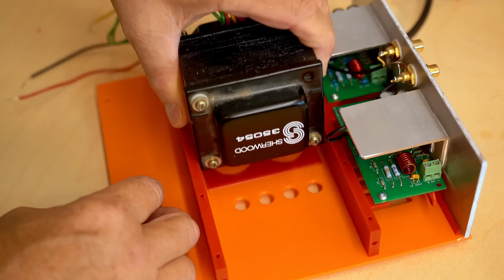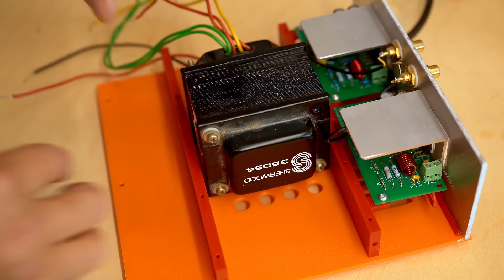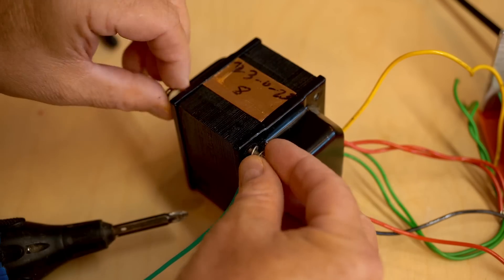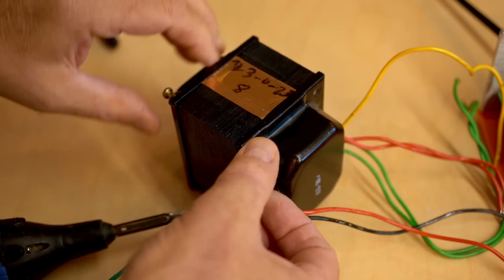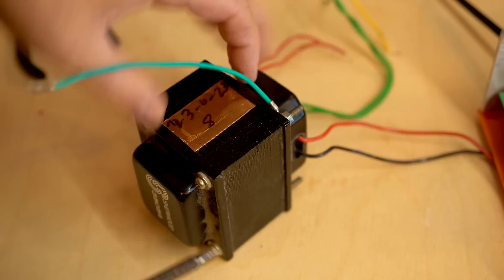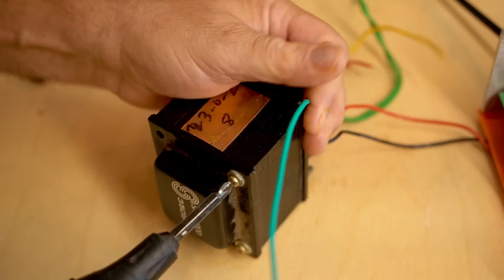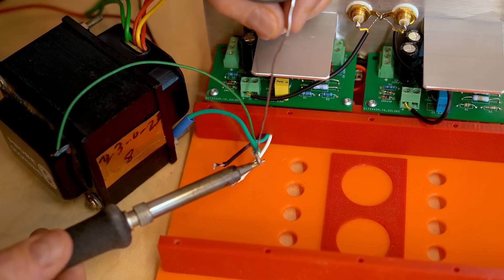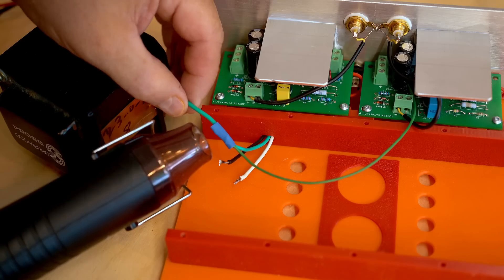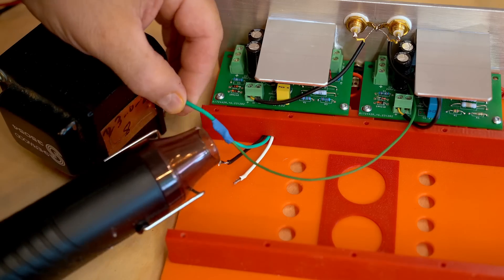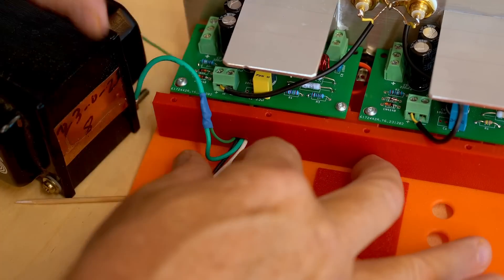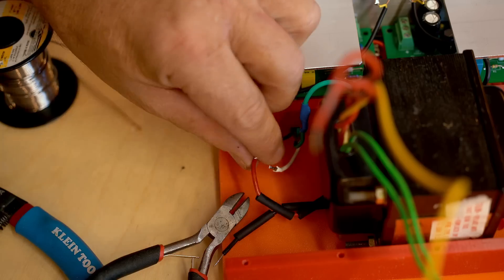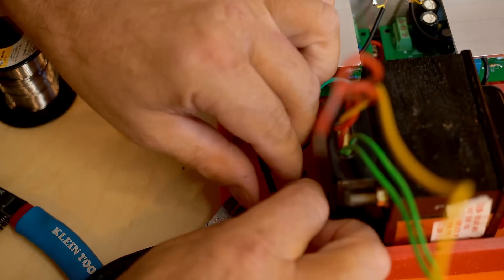And here's the transformer. It's 46 volts AC. I got this from an old receiver that I took apart a few years ago. Now more wiring. I like to solder everything and then get a heatshrink on there to seal it up.